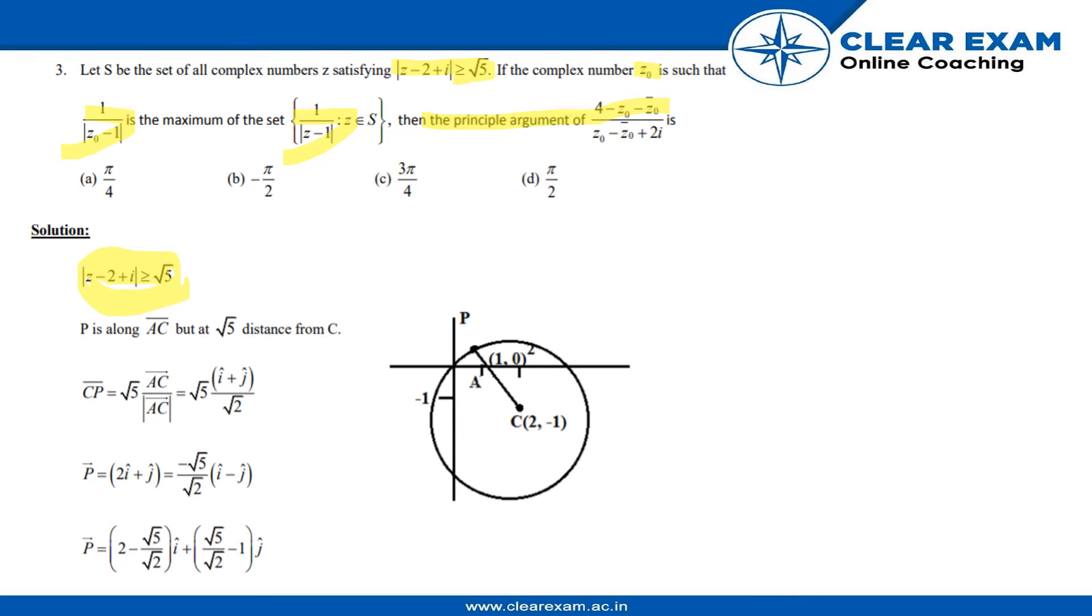This is A which is (1, 0), and this is point P. So P is along AC at √5 distance from C, because the radius is √5.